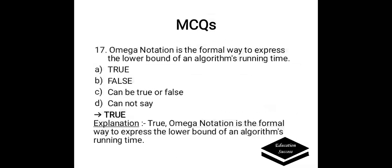Omega notation is the formal way to express the lower bound of an algorithm's running time. Options: a) true, b) false, c) can be true or false, or d) cannot say. Correct answer is true. Omega notation is the formal way to express the lower bound of an algorithm's running time.